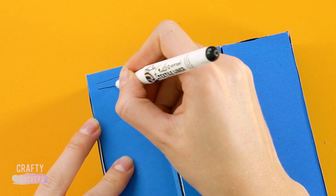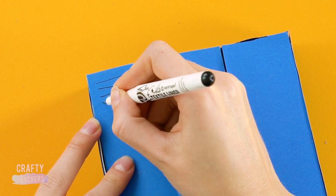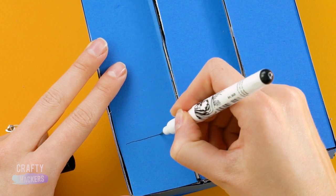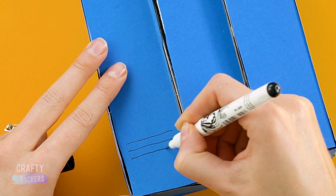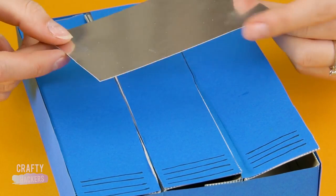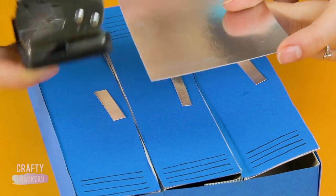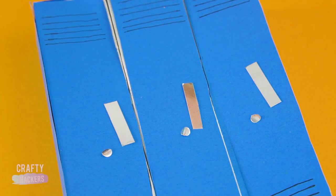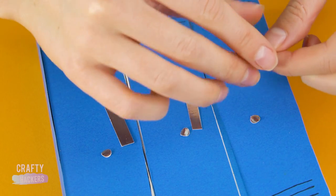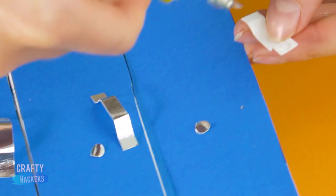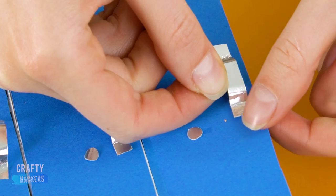Draw some lines at the top and bottom of the lockers with a fine tip marker. This mirror paper should work great for handles. Use a hole punch to get three circles. And glue them onto the doors as combination locks. Bend the paper to form the handle and glue in place.